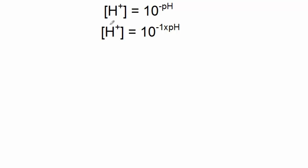H plus is equal to 10 raised to the negative pH, or 10 raised to the negative 1 times a pH value. So if you multiply a pH value times negative 1 and let that be the exponent, and let 10 be the base, you'll be able to get the hydrogen ion concentration.